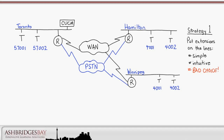A very important concept in Call Manager is the external phone number mask. You configure this on the line, and the mask is used to generate caller ID on calls to external numbers — in our drawing, for calls via the PSTN. In our example network, the mask for Toronto is 416-555-XXXXX. In Hamilton, 905-555-4-XXX. And in Winnipeg, it's 204-555-4-XXX.